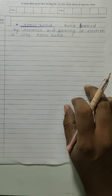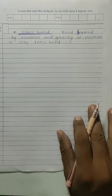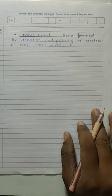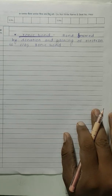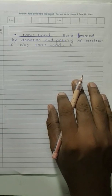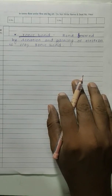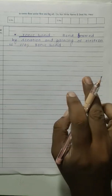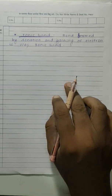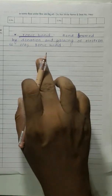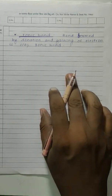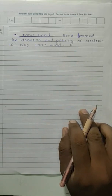Now we are moving to the next topic: ionic bond. Bond formed by donation and gaining of electron. In the previous lecture we saw covalent bond — bond formed by equal sharing of electron. If there is equal sharing of electron, it is called covalent bond. And bond formed by donation and gaining of electron is called ionic bond.